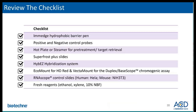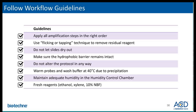On this checklist are some key components that can help ensure your success with RNAscope assay — for example, using SuperFrost Plus slides, using appropriate mounting media, using fresh reagents, and using the hot plate or steamer for pretreatment. We also have some recommended general guidelines: once you begin the assay, do not let the slides dry out; do not alter the protocol; and warm the probes and wash buffer before using at 40 degrees.